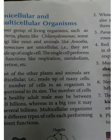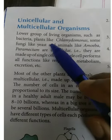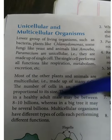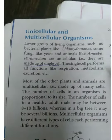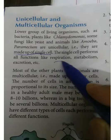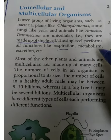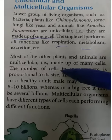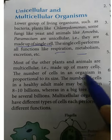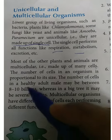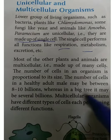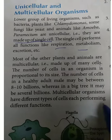Now continuing with unicellular and multicellular organisms: lower groups of living organisms such as bacteria, plants like Chlamydomonas, fungi like yeast, and animals like amoeba and paramecium are unicellular — made up of a single cell. This single cell performs all functions like respiration, metabolism, and excretion. Most other plants and animals are multicellular, made up of many cells. The number of cells in an organism is proportional to its size; in a healthy adult male it may be between 8 to 10 billion, and in a big tree it may be several billion. Multicellular organisms have different types of cells, each performing different functions.